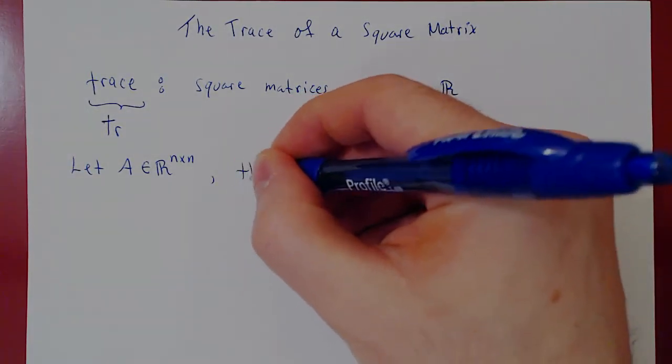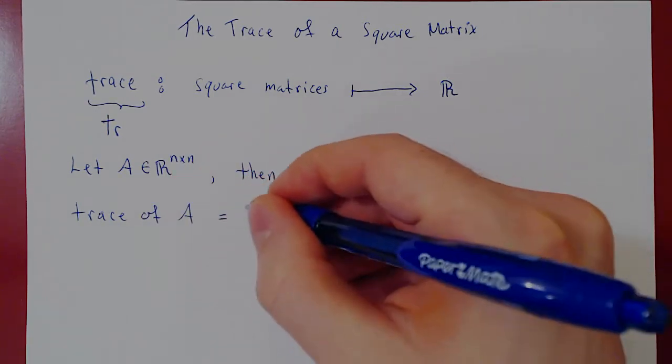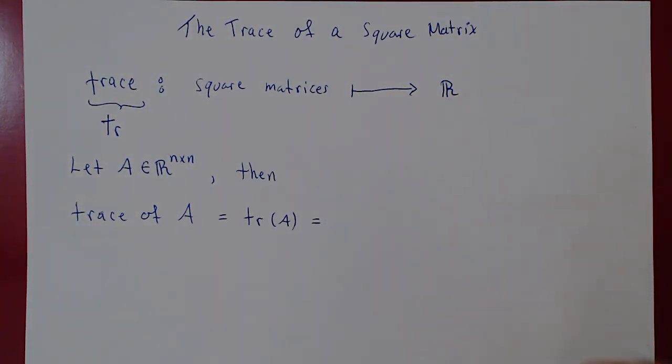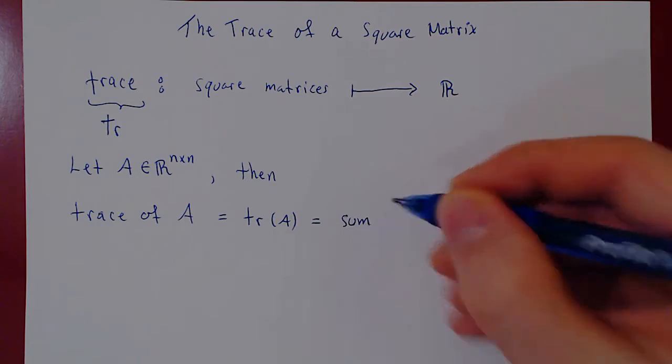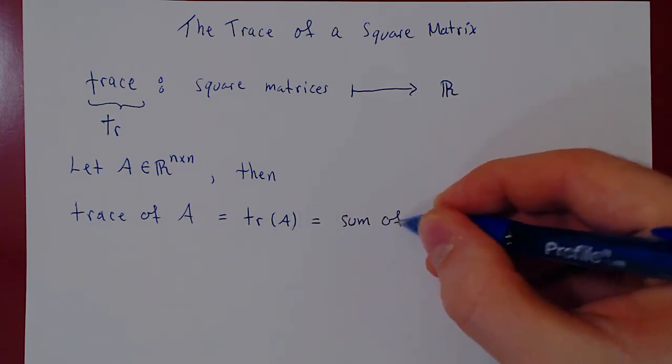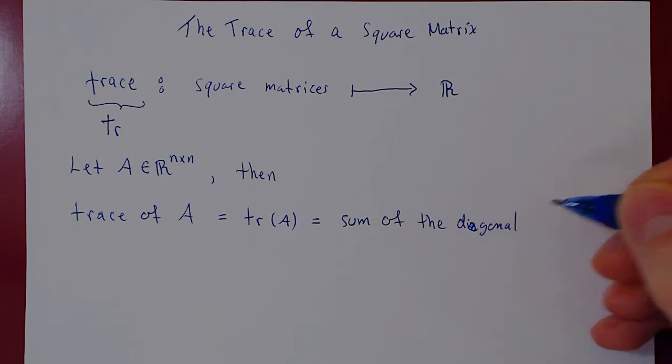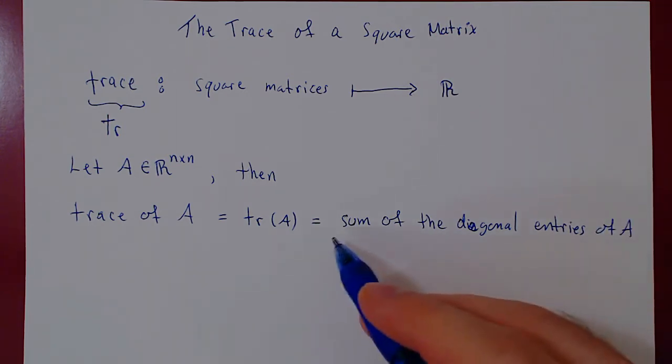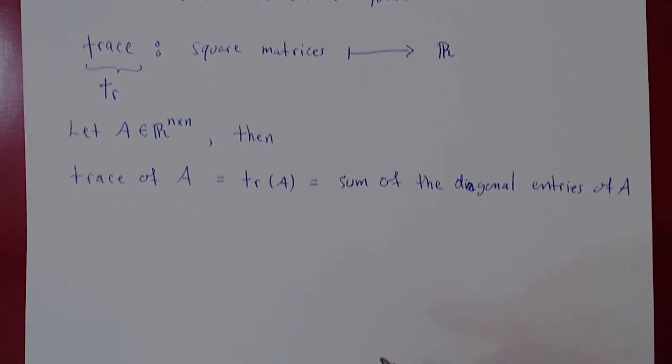Then we have the trace of A. So we write trace of A. The shorter form is simply tr with A, equals. Well, all it is, is the sum. And this is how you will think of it numerically when you actually have an explicit matrix and you perform the calculation. The trace of A is just the sum of the diagonal entries of A. Well, that's it. That's the trace. You add the entries on the main diagonal of A. That's how you should think of the trace numerically.